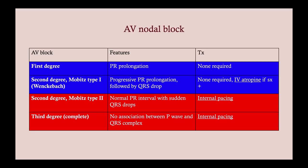Reviewing your AV nodal blocks: first-degree is merely PR prolongation and nothing else — because it's almost never symptomatic, no treatment is needed. Second-degree Mobitz type 1, or Wenckebach, is progressive PR prolongation ultimately followed by a QRS drop; it's rarely symptomatic so no treatment is required, but if there are symptoms you can do IV atropine, and if refractory you can go on to pacing. Second-degree Mobitz type 2, also known as Hay, is a normal PR interval with sudden QRS drops; it's occasionally symptomatic, and if refractory you'll do internal pacing. Third-degree, or complete, AV nodal block is almost always symptomatic — no association between P wave and QRS complex — and these patients will ultimately need internal pacing.